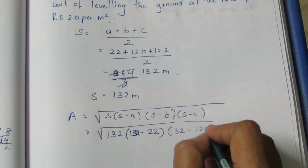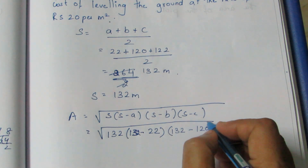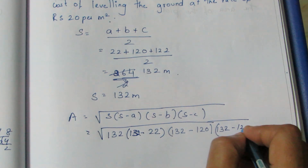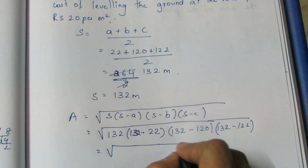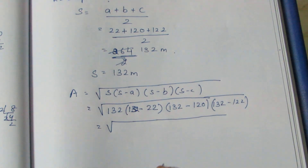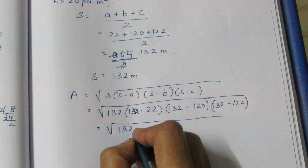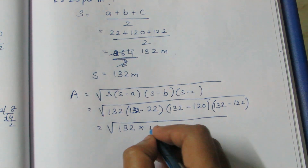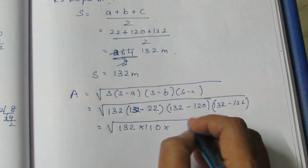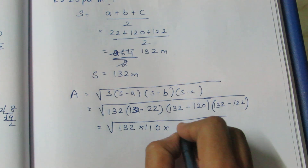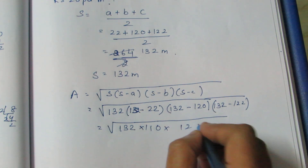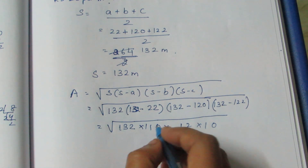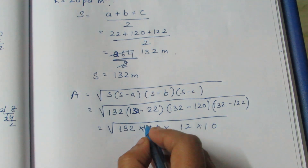S minus B is 132 minus 120, and S minus C is 132 minus 122. This gives us values: 132 minus 22, 132 minus 120, 132 minus 122. One of the values is 110, which is 11 into 10.